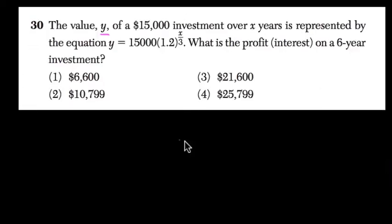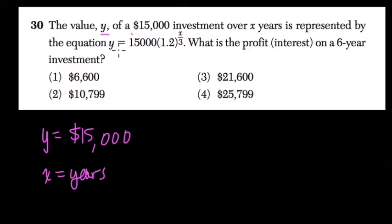So in this question, they tell you that the value y of a $15,000 investment, so y is equal to your initial investment, over x years, so x is equal to the years, is represented by this equation. y is equal to, this is a pretty standard exponential growth equation, $15,000 times 1.2 to the x over 3 power.